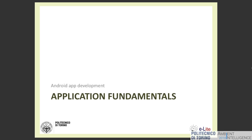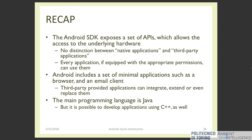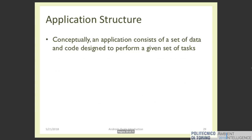We have seen the platform and the architecture. Now let's look at the single applications. To recap: in order to develop an Android application you need to install the Android Software Development Kit, which exposes a set of Java APIs allowing access to the underlying hardware. The key points to remember are: there is no distinction between native and third-party applications; each application must ask the user permission to access sensitive hardware and data; you can reuse application components; and the main programming language is Java.